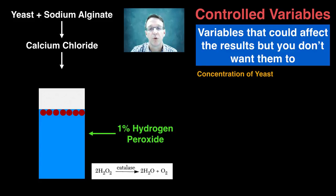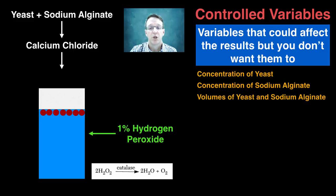So what might be some examples here? Well, first of all, you'd want to control the concentrations of both the yeast and the sodium alginate so that you can make consistent spheres. You need to control the volumes of the yeast and the sodium alginate that you use. You need to keep the concentration of the hydrogen peroxide the same.